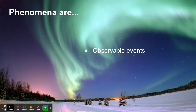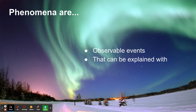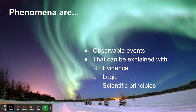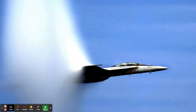Phenomena are central to our understanding of science. They're observable events that can ultimately be explained with the use of evidence — in other words, data and observations — with the application of logic and scientific principles. We're going to go through a variety of different examples of phenomena, but this is just a list of literally billions and trillions of phenomena that you could use to study science.